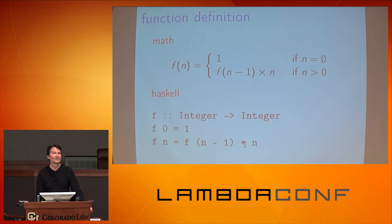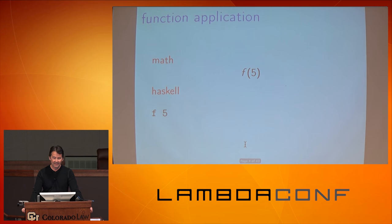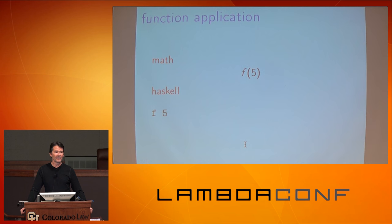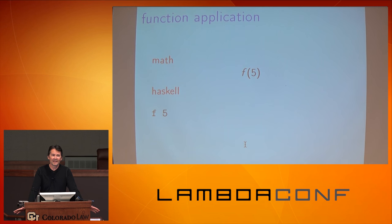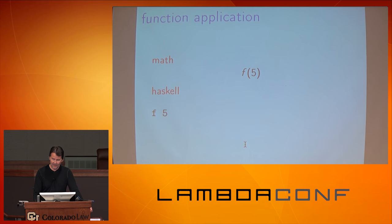The factorial definition looks pretty similar to the math definition. In math, function application is written as f of (x). In Haskell, the most important thing in functional programming is applying a function, and Haskell made the decision to make that almost syntax-free: you just name the function and give it the arguments — no parentheses, no commas, no curly braces. That was a great decision; it makes a very compact notation.